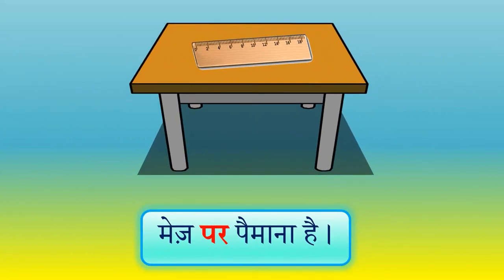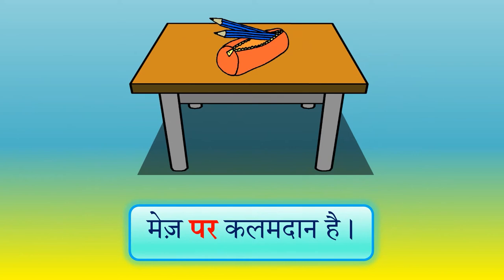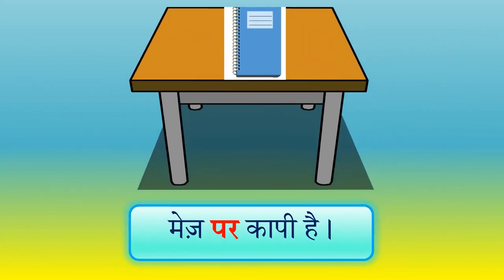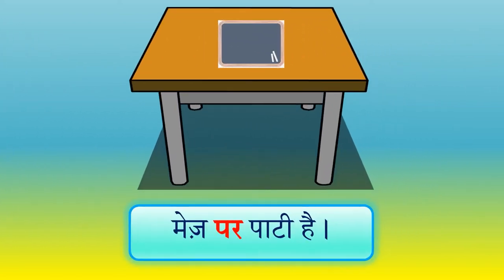और इस मेज पर क्या है? बिल्कुल सही - मेज पर पैमाना है। तो बोलिए - मेज पर पैमाना है। इधर देखिए, मेज पर क्या है? हाँ, मेज पर कलमदान है। तो बोलिए बच्चो - मेज पर कलमदान है। अब इस मेज पर क्या है? हाँ, कापी। तो बोलिए - मेज पर कापी है। अब इधर देखिए - मेज पर पाटी है।